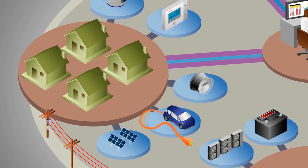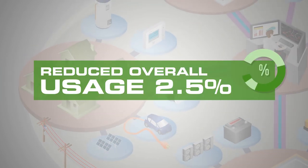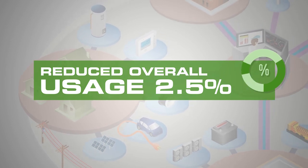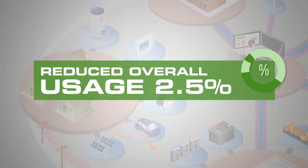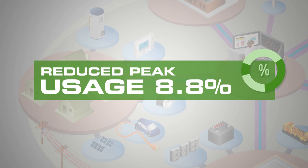The time of use rates, energy information services, and financial incentives were found to reduce overall electricity usage by 2.5% and peak usage by 8.8% for the one-year period of the trial.